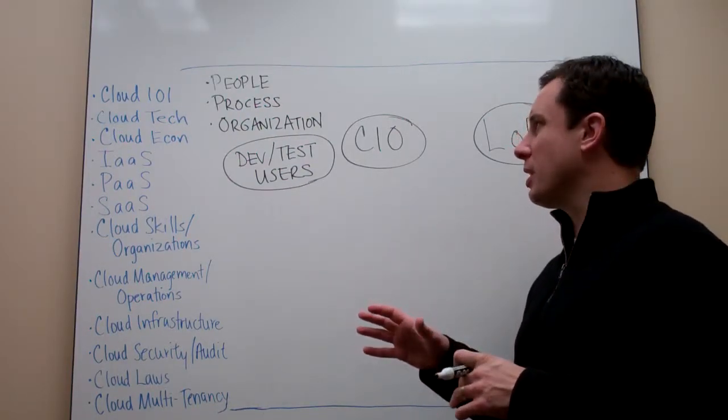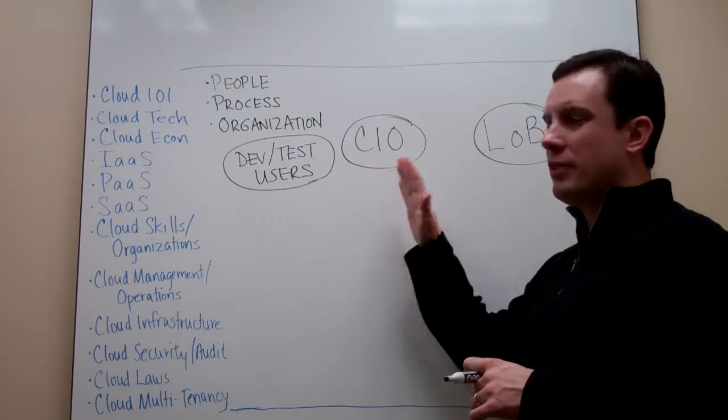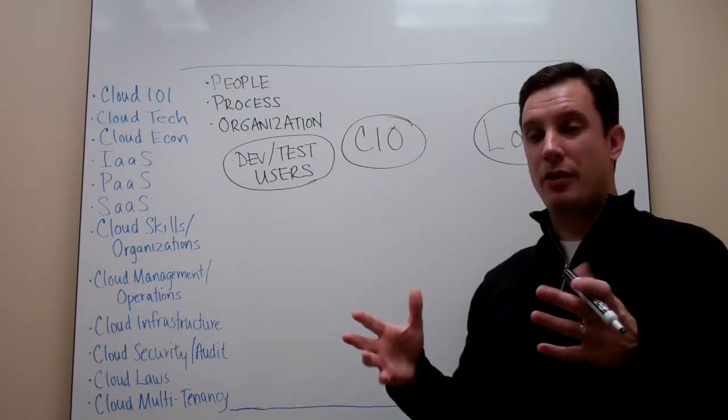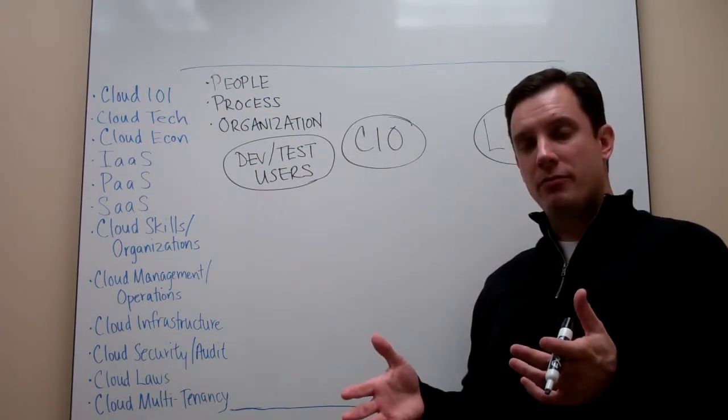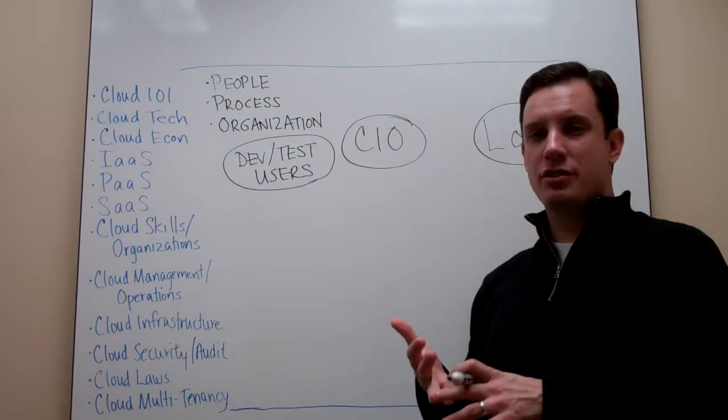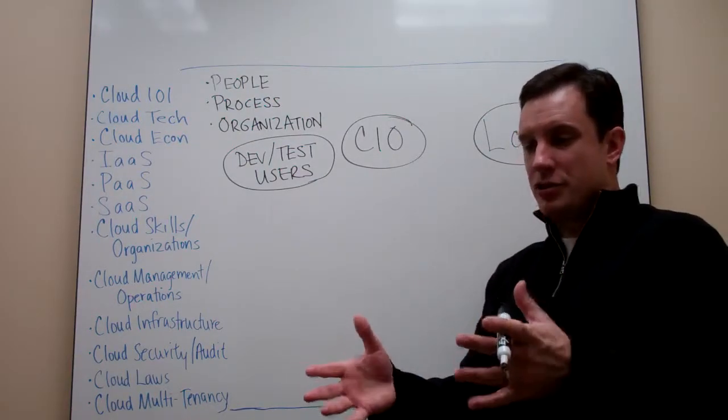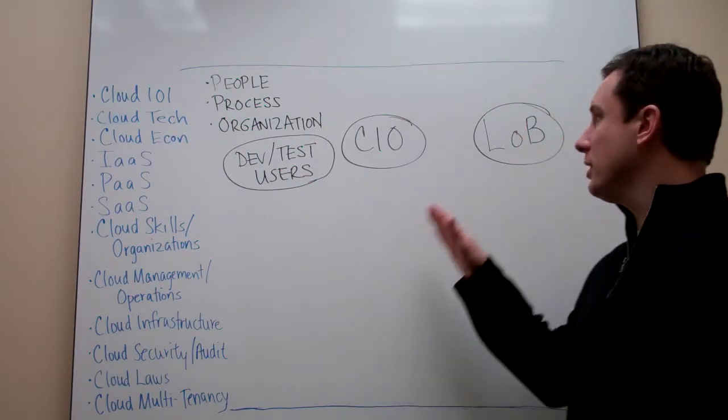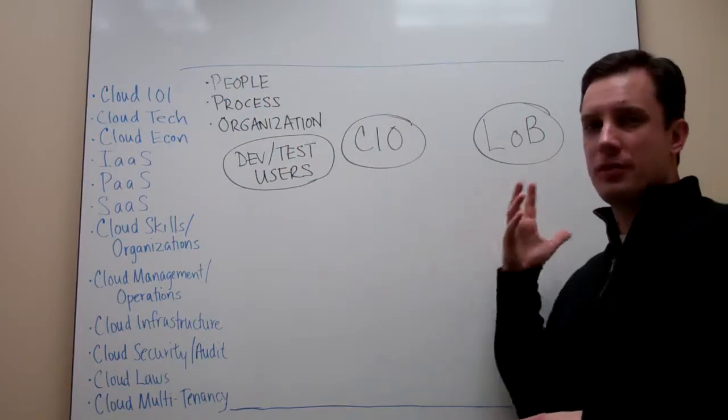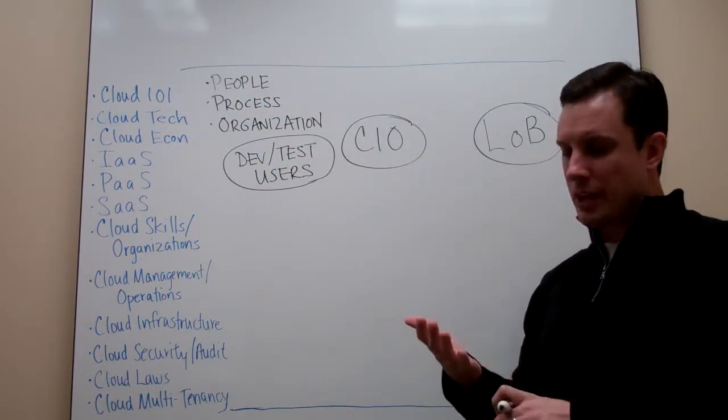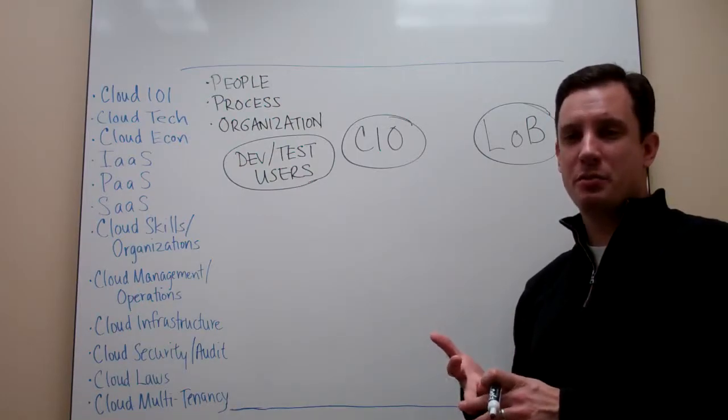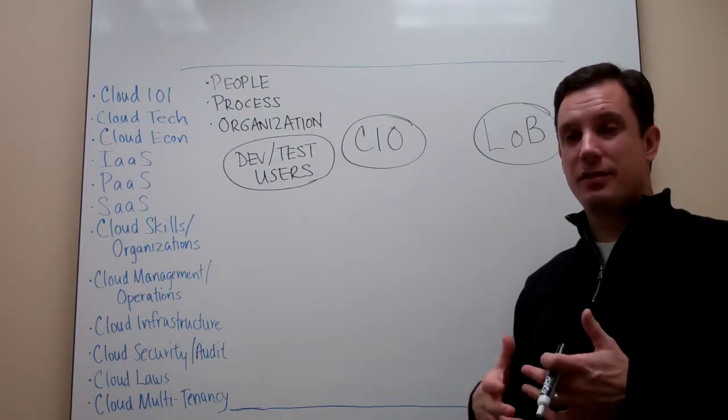So let's start with some basic premise. Today, the CIO has a certain amount of responsibility for cost, for budgets, to be able to deliver infrastructure and applications. Ultimately, they're trying to service the lines of business that want to be able to produce products, produce services, interact with customers, consume IT services.